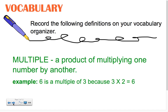Take a minute now to record today's vocabulary word in your organizer. This word is 'multiple.' The definition of multiple is a product of multiplying one number by another. Example: 6 is a multiple of 3 because 3 times 2 equals 6. Go ahead and pause this video while you get your organizer to record this week's vocabulary word. When you're ready to move on, come back and push play.